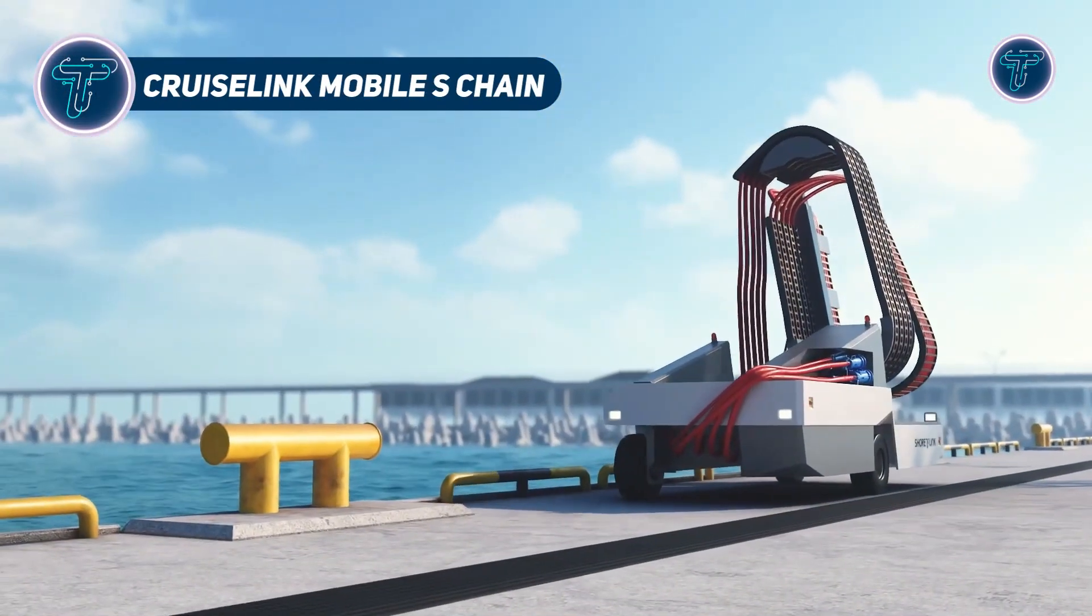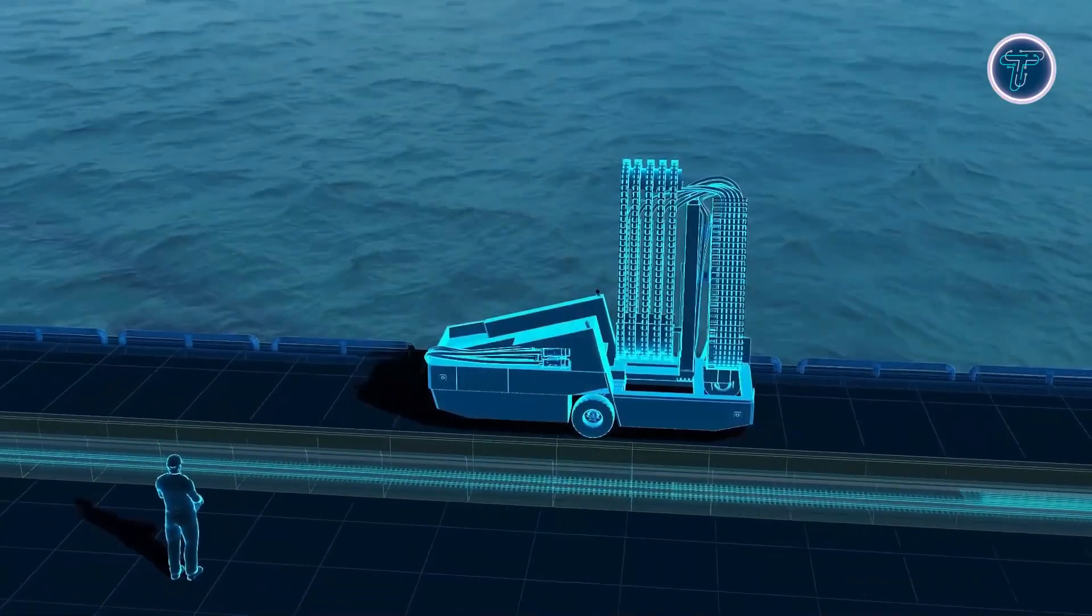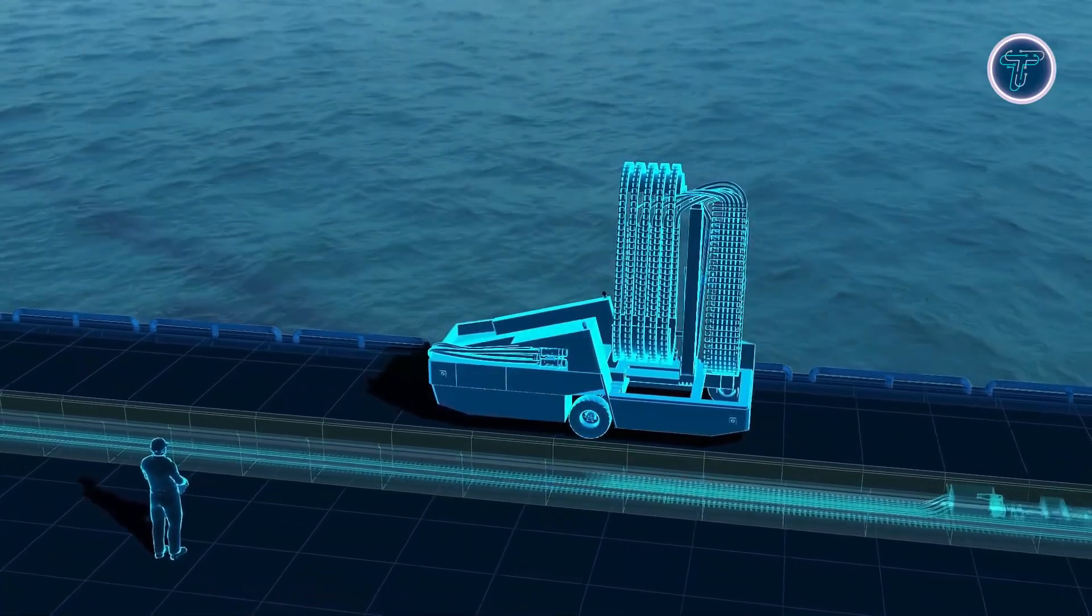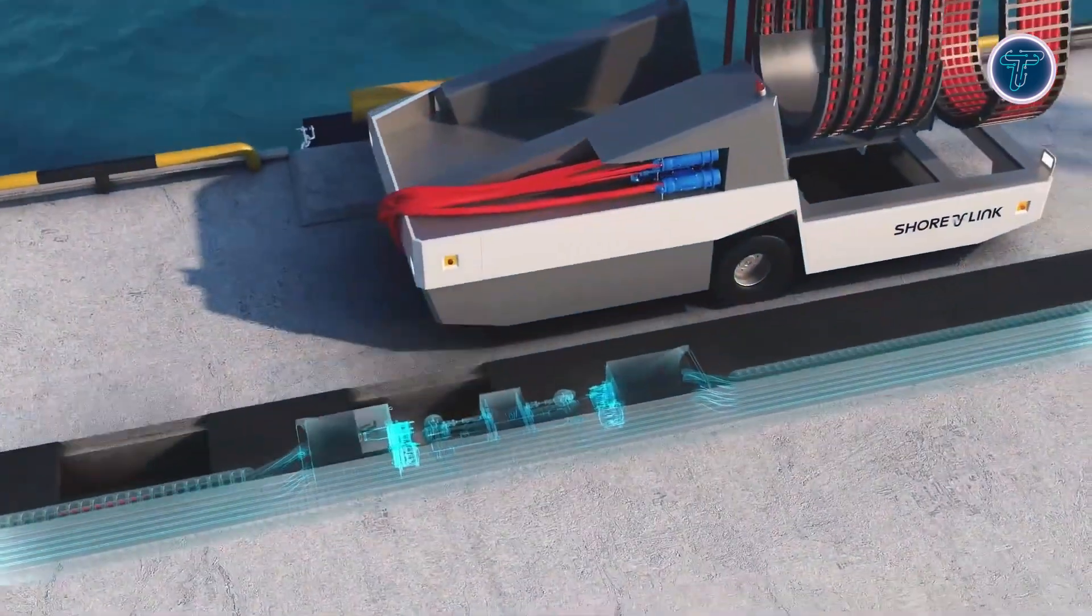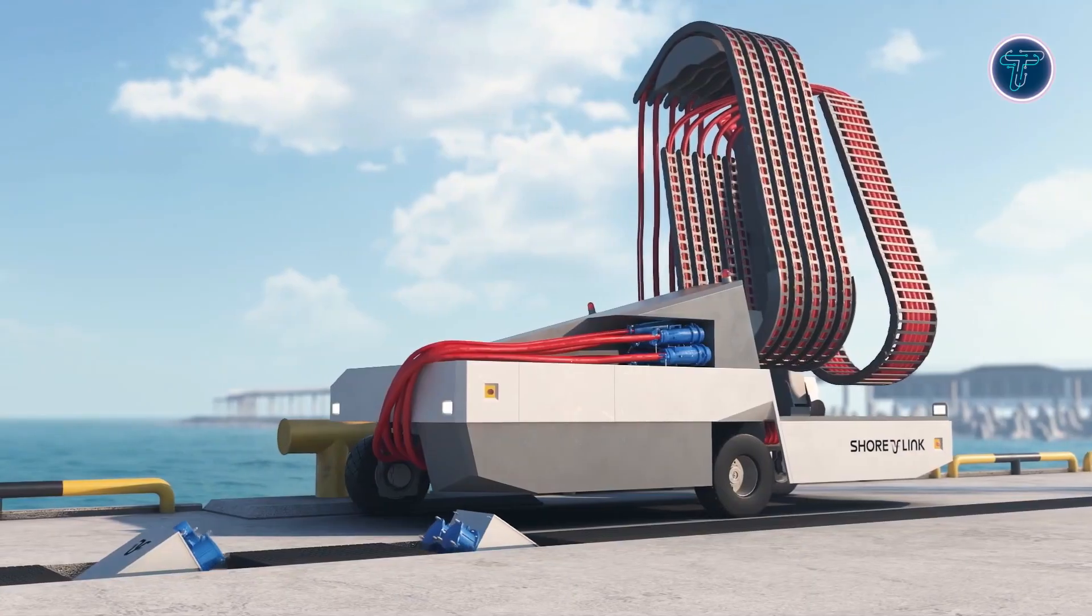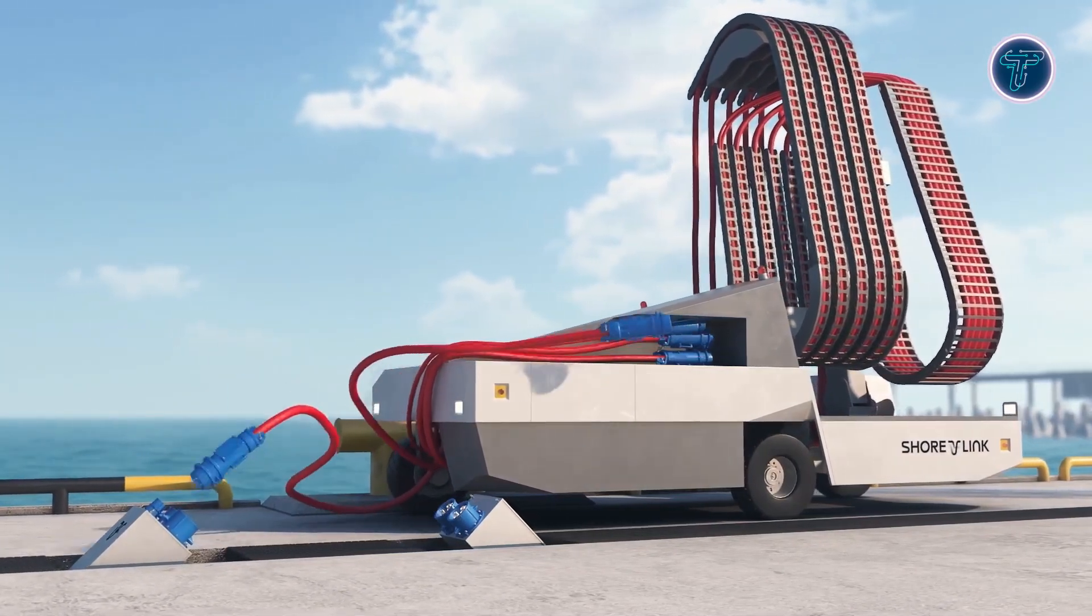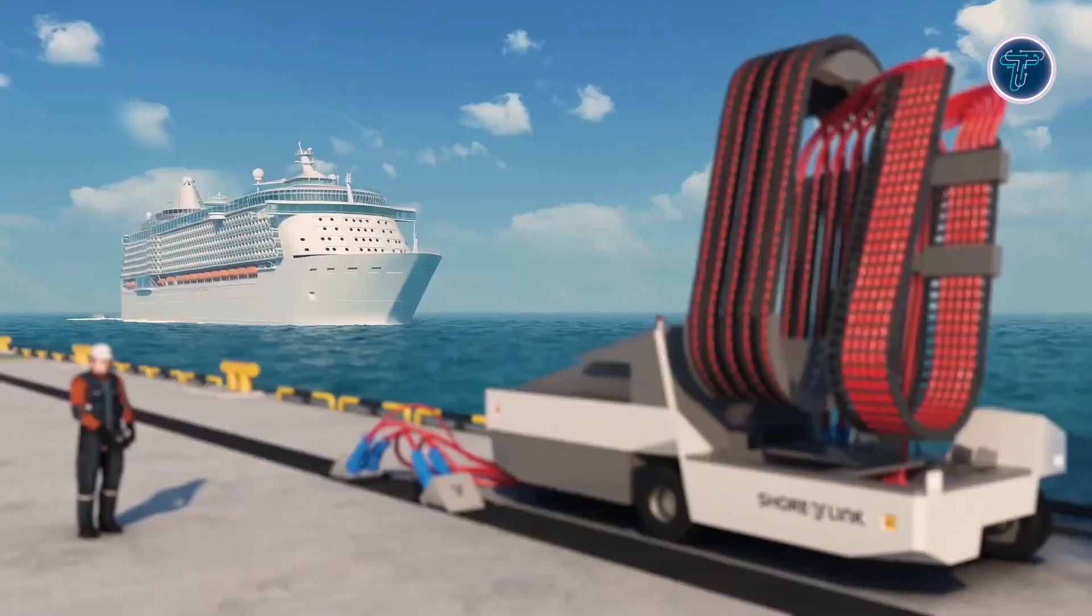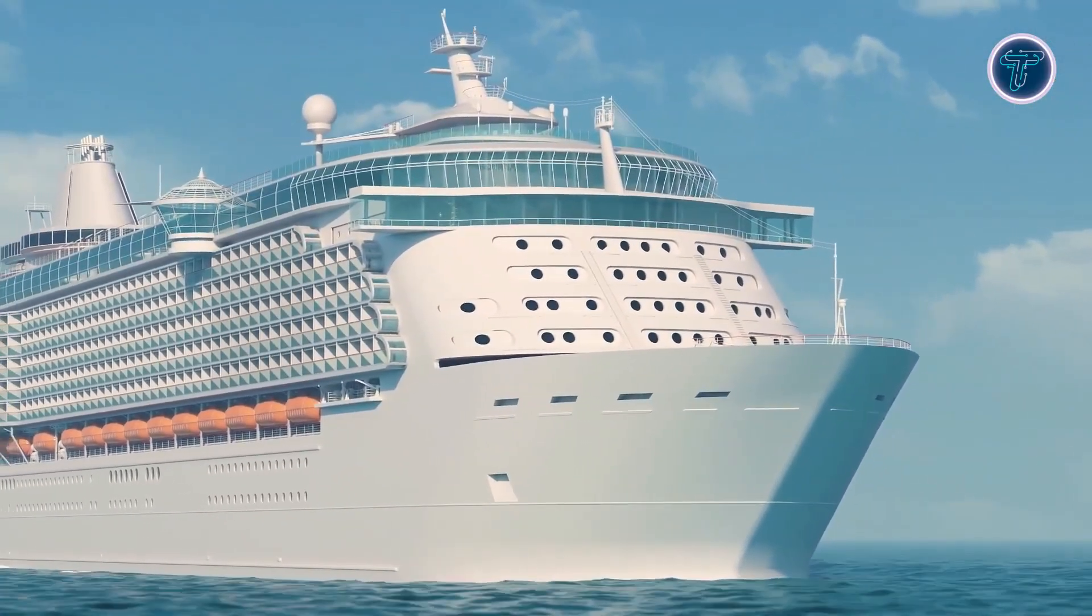CruiseLink Mobile S Chain. The CruiseLink Mobile S Chain is a cutting-edge shore power solution from ShoreLink designed to make cruise ship electrification efficient, safe, and environmentally friendly. This mobile cable management system combines a compact, self-propelled base with a chain system that neatly conceals cables and the connection cabinet, keeping keys clear and organized. Its flexible design allows the connection point to be positioned precisely, adapting to different ship sizes and docking locations.